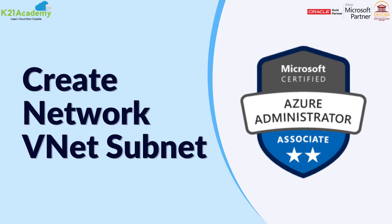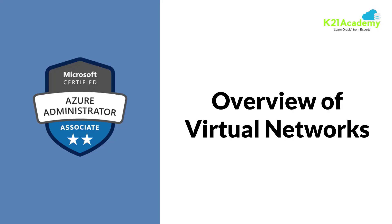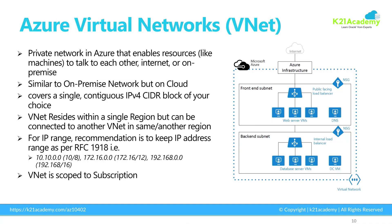When you create any resource like a compute machine — which is a Linux or Windows machine — that machine needs an IP address. Similarly, when you create a database, that needs an IP address. But if one machine needs to talk to another machine, they communicate over the network. Or a machine on-premise wants to talk to Azure cloud, or a machine in Azure in one region wants to talk to another region. For all those things you need a network.